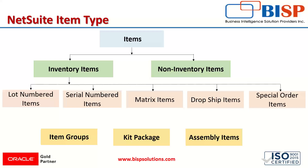The next category is matrix items. When we have a combination of certain options, like size and color, that falls under the matrix item category. Matrix items let us track items by options such as size and color. A matrix item consists of a parent item and sub items, and it can have a variety of items.